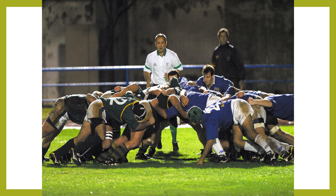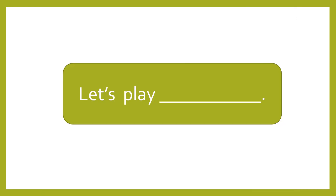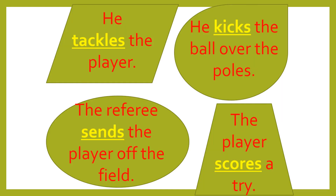What's this one? It looks a little like football — that's rugby. Rugby is another version of football, but it's a bit tough. He tackles the player — in rugby and American football, tackles are very strong. He kicks the ball over the poles. The referee sends the player off the field — he got a red card, sent him out. The player scores a goal. We might say 'goal' in American English or 'try' in British English.